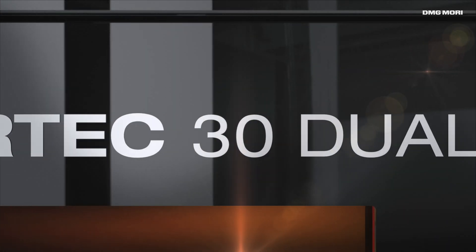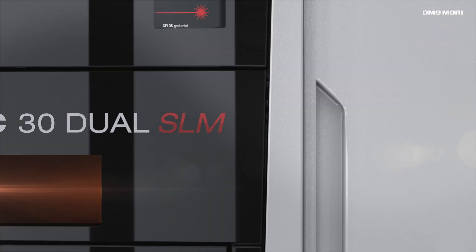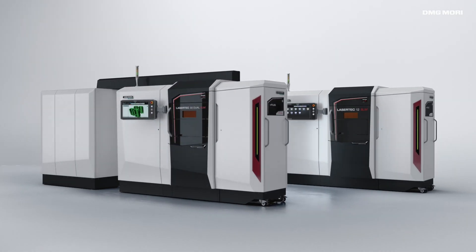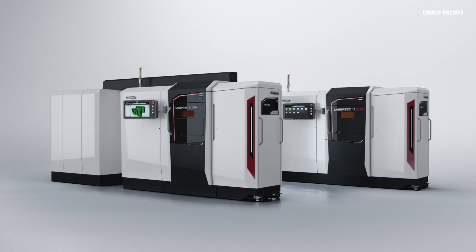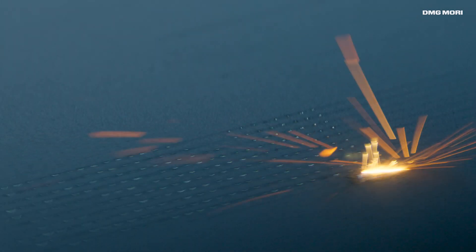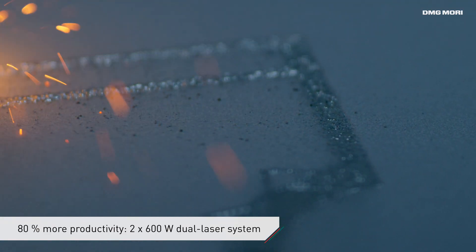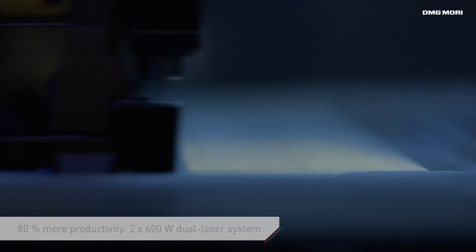DMG Mori Lasertek SLM Machines stand for high precision selective laser melting with a powder bed process. The new Lasertek 30 Dual SLM offers two powerful 600 watt lasers with up to 80% higher productivity.